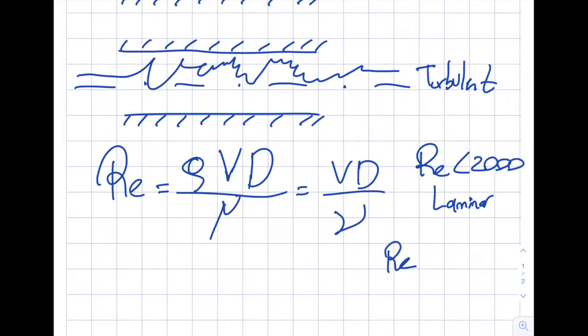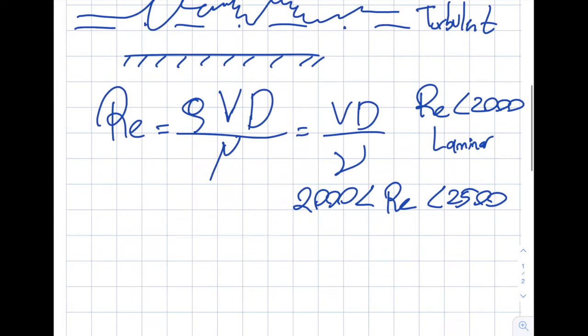If we have my Reynolds number between 2,000 and 2,500, some people go up to all the way to 10,000 as well, this is called the transitional flow. Then when my Reynolds number is about 2,500 for sure, then I'm going to get myself some turbulent flow.